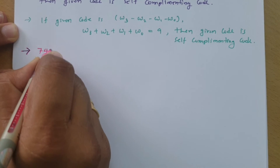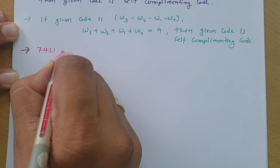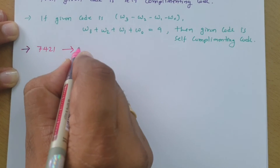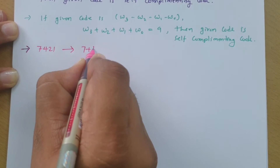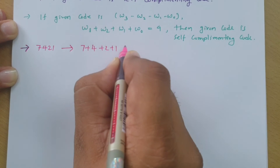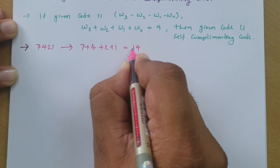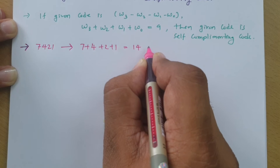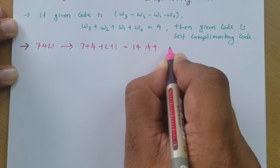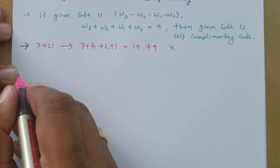We have the 7421 code. Here we need to find the addition of the weightages: 7 plus 4 plus 2 plus 1, which is equivalent to 14. That is not equal to 9, so we can say this is not a self-complementing code.